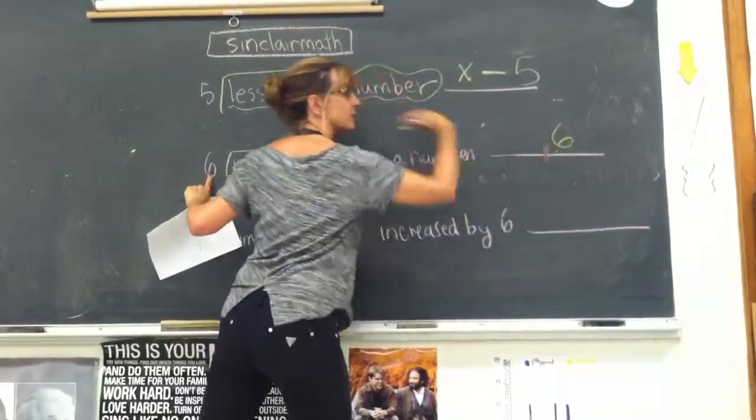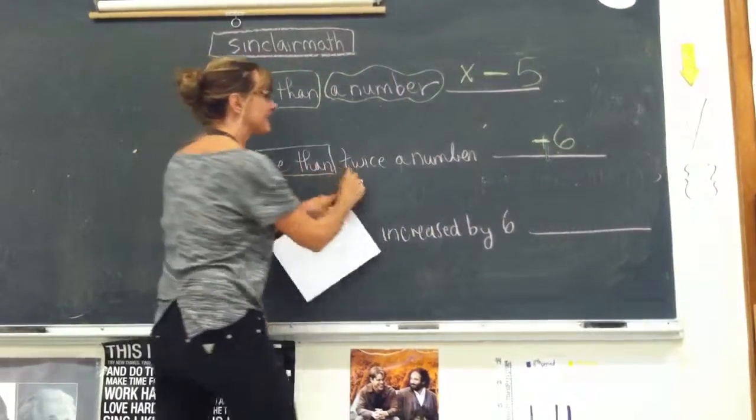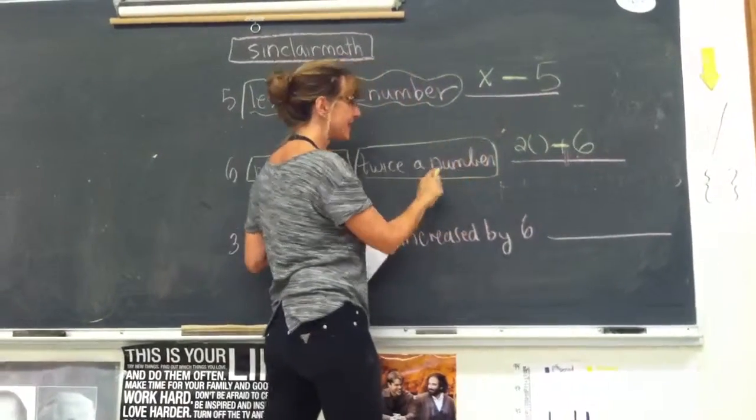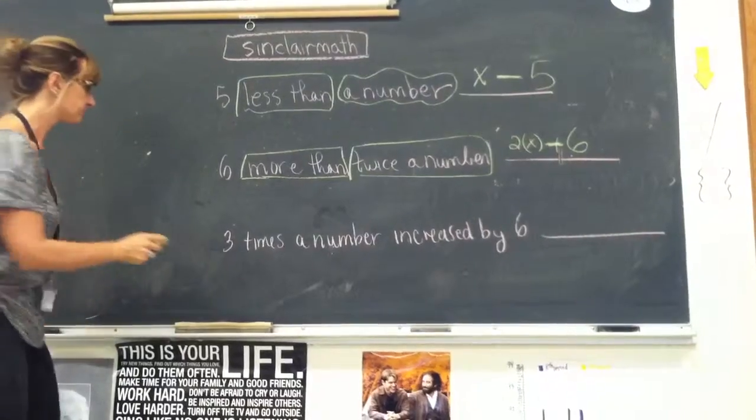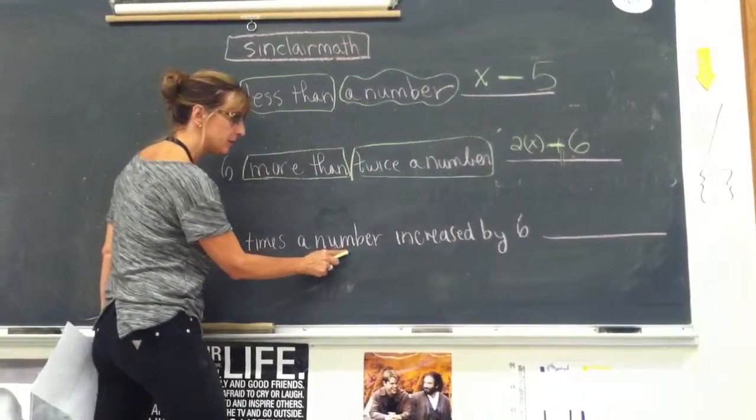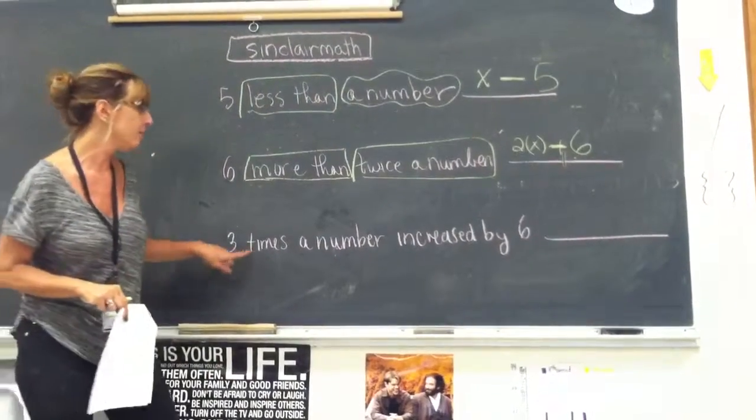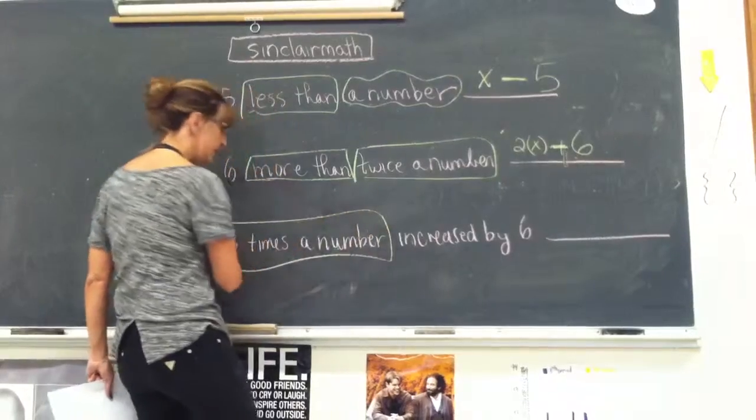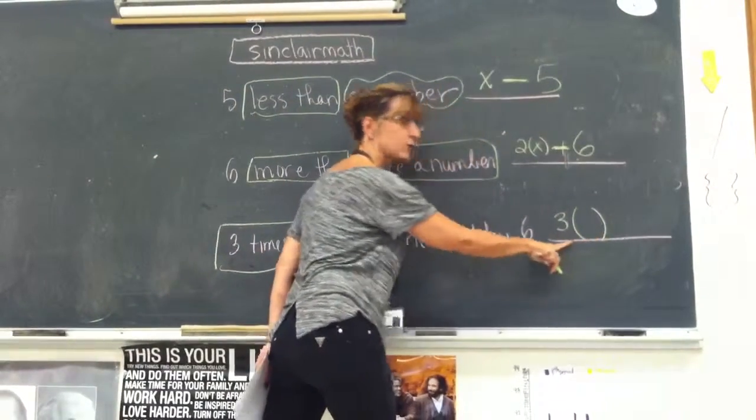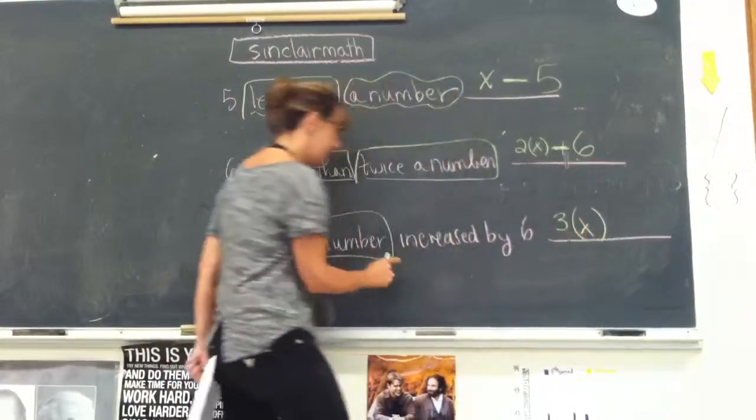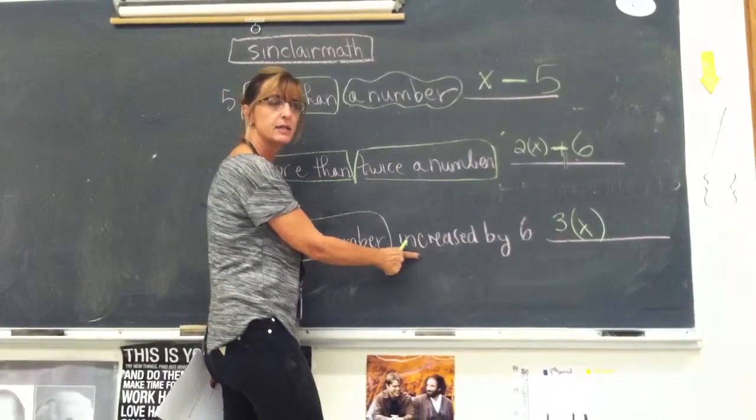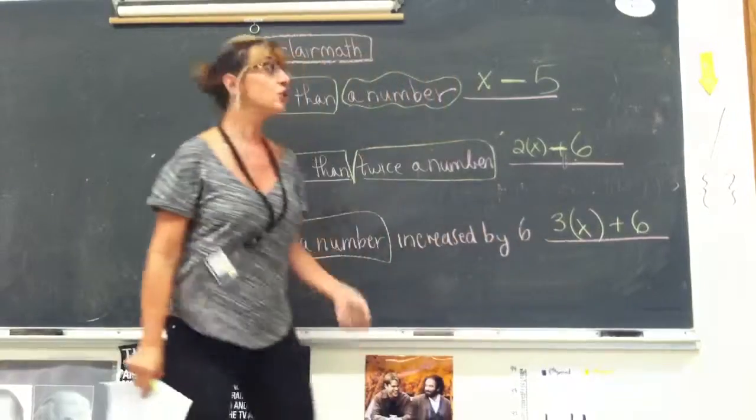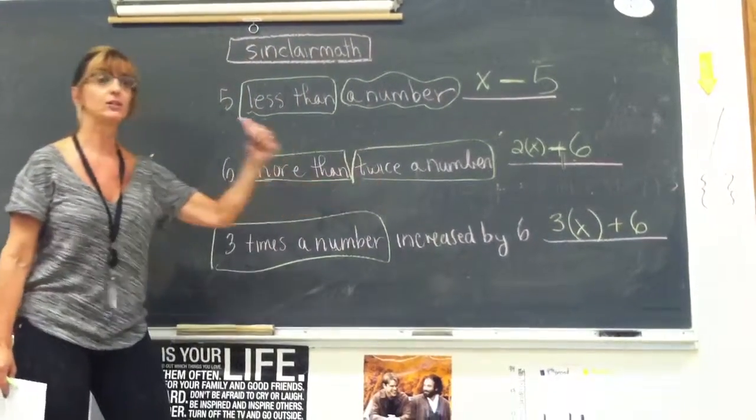Six more than twice a number. As I read three times the number, so three times, that's how you write three times. Three times the number. Increase. What do I write for the word increase? By six. Three times the number increased by six. So when do I write backwards? Less than or more than. That's my clue, I'm going to go backwards.